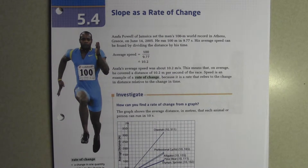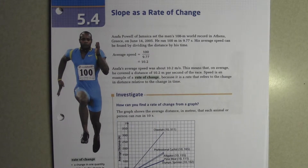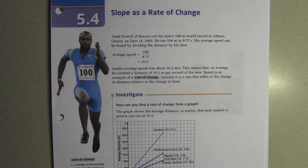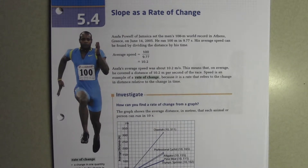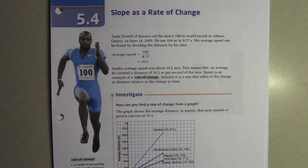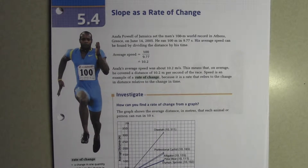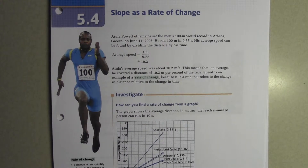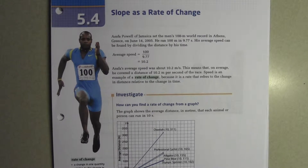This means that on average he covered a distance of 10.2 meters per second of the race. Speed is an example of a rate of change because it refers to the change in distance relative to the change in time.